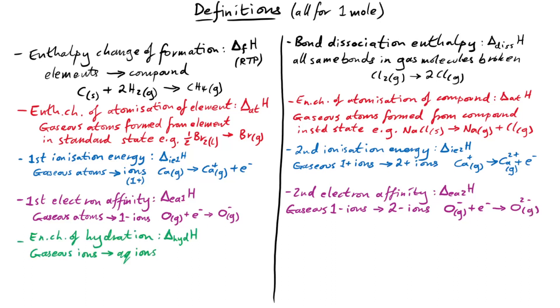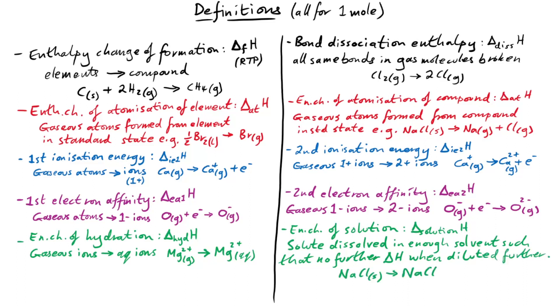Then we have enthalpy change of hydration. That's when we have one mole of aqueous ions being formed from one mole of gaseous ions. Then the enthalpy change of solution. So when one mole of a solute is dissolved in enough solvent such that no further enthalpy change occurs. So basically when we dissolve one mole of an ionic substance.